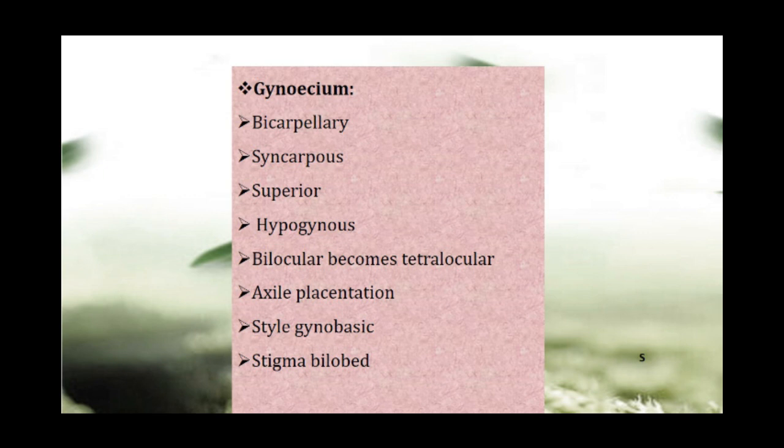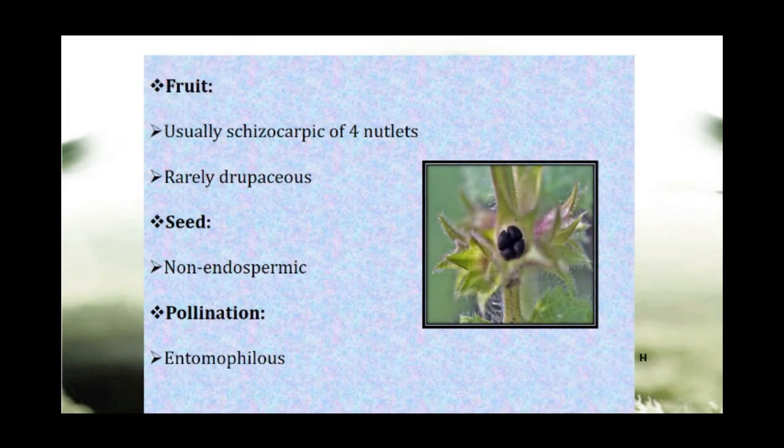The style is gynobasic, meaning it arises from the base of the ovary — specifically from a cavity in the centre of the ovary. The stigma is bilobed, as seen in picture C on the left side.